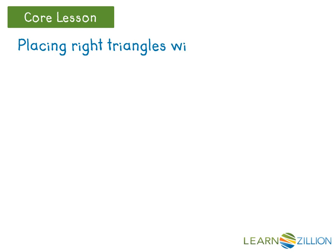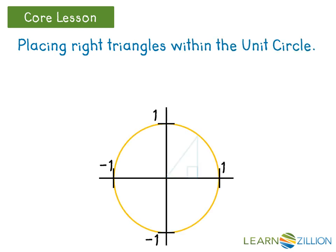A right triangle can be created within the unit circle by using the radius of one as a hypotenuse, part of the x-axis as a leg, and a vertical segment connecting the two as a leg.